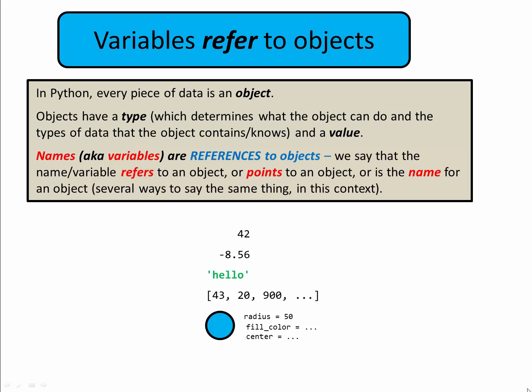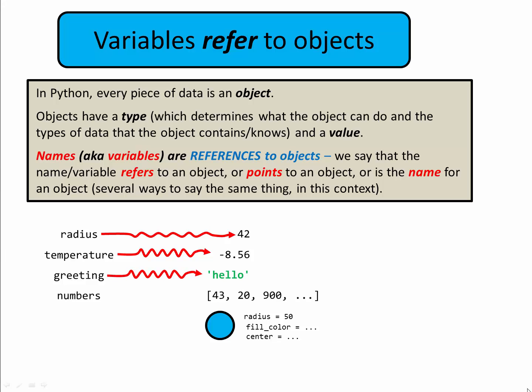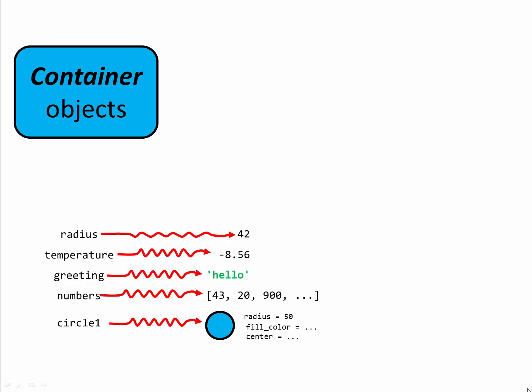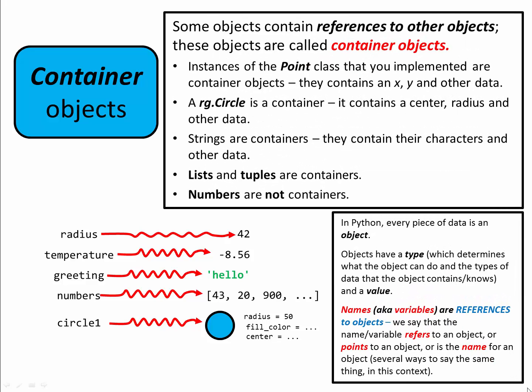For example, we might have the variable radius refer to the integer 42. The variable temperature might refer to the floating point number minus 8.56. The variable greeting might refer to the string hello. The variable numbers might refer to a list. And the variable circle one might refer to an RG circle. Variables refer to objects, and some objects themselves contain references to other objects.